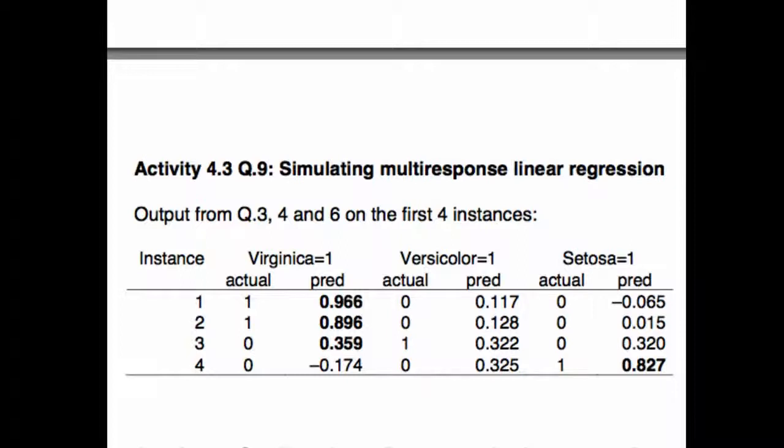So multi-response linear regression is going to predict Virginica for instance number 1. That's the largest value. And that's correct. For the second instance, it's also a Virginica, and this is also the largest of the three values in its row. For the third instance, it's actually a Versicolor. The actual output is 1 for the Versicolor model. But the largest prediction is still for the Virginica model. It's going to predict Virginica for an iris that's actually Versicolor. That's going to be a mistake. And in the third case, it's actually a Setosa. The actual column is 1 for Setosa, and this is the largest value in the row. So it's going to correctly predict Setosa. So that's how multi-response linear regression works.